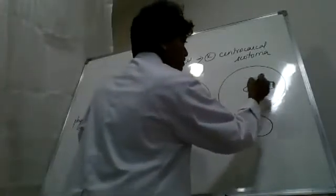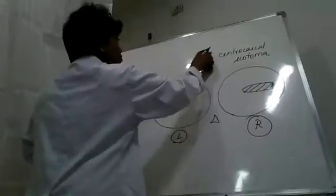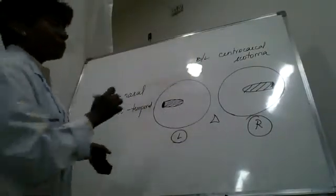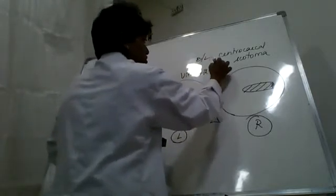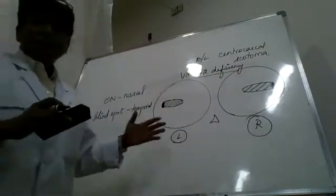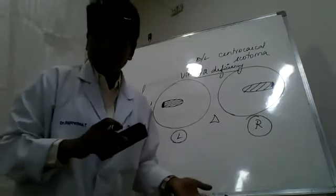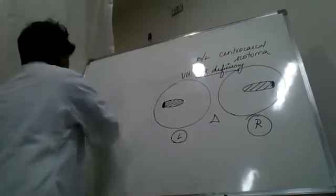Now suppose you're given a field like this where you have a bilateral central cecal scotoma. Now bilateral central cecal scotoma, I told you, it's very typical of a vitamin B12 deficiency. So I'm just extending my little talk on what I talked about in the previous video. I talked about central cecal scotoma, unilateral and bilateral.